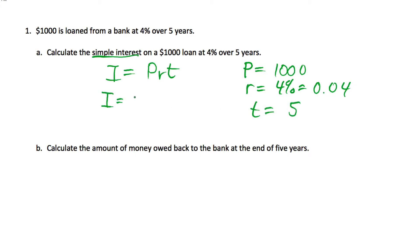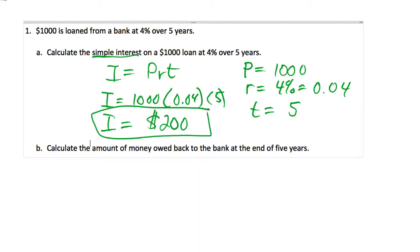And so we're going to substitute those numbers into our formula and calculate that out. And that's going to come out to $200 in interest. So we will have to pay $200 in interest on top of the thousand dollars back at the end of five years for the use of the bank's money.